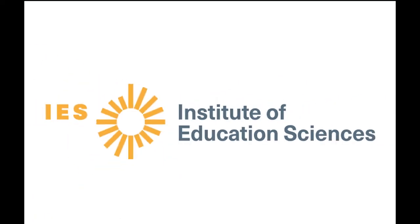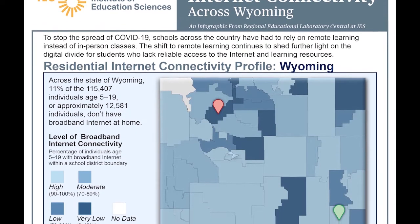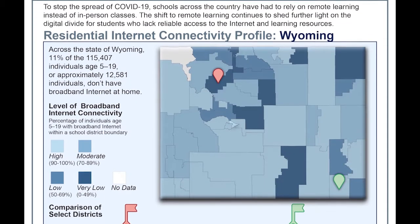This infographic shows the residential internet connectivity profile for the state of Wyoming. Across the state, roughly 1 in 10 students does not have home internet.